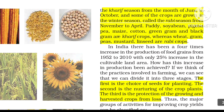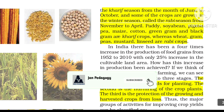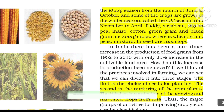In India, there has been a four times increase in the production of food grains from 1952 to 2010, with only 25% increase in the cultivable land area. How has this increase in production been achieved?